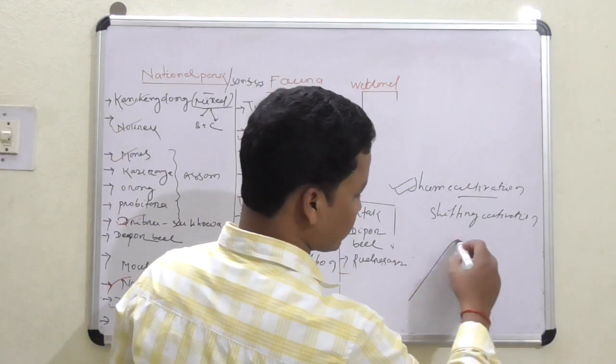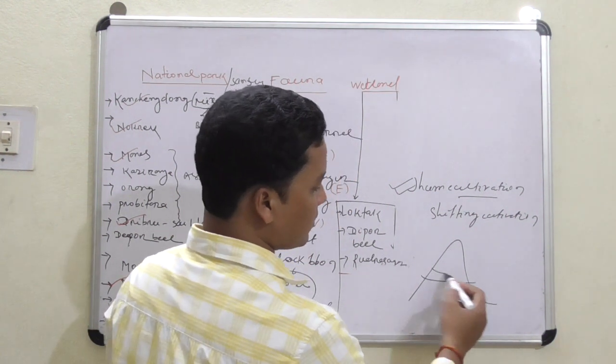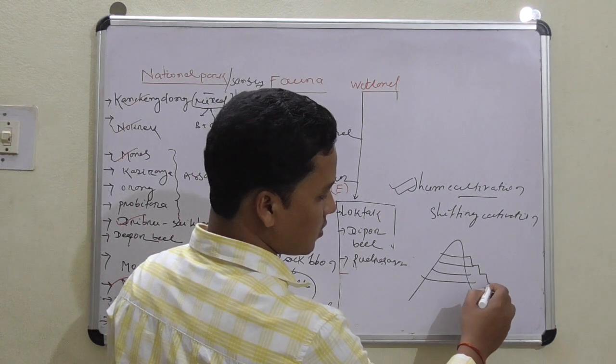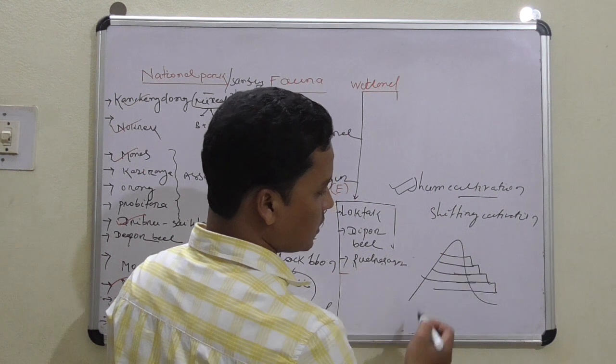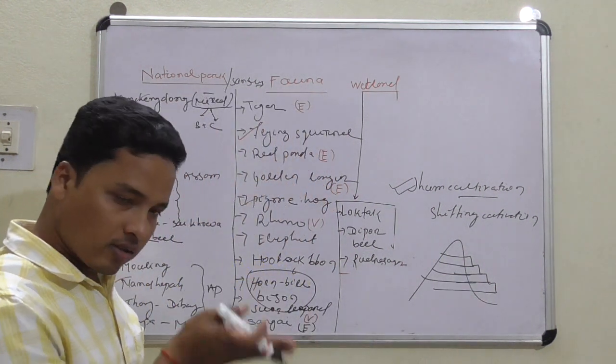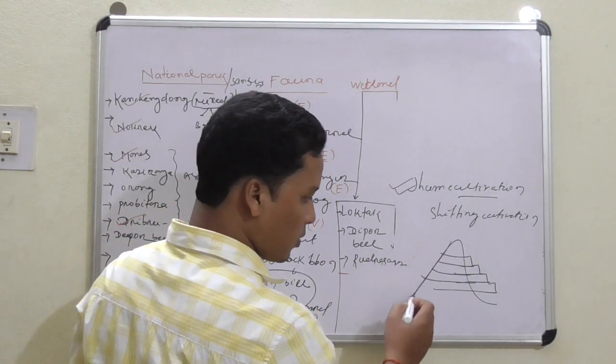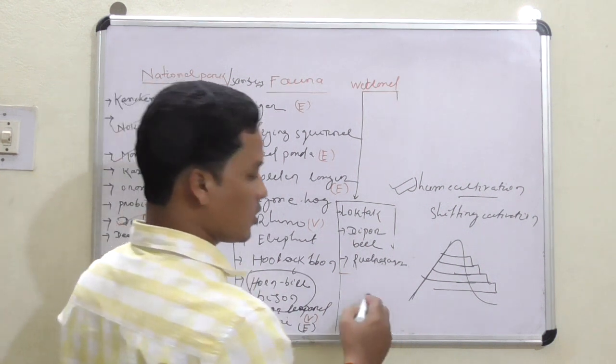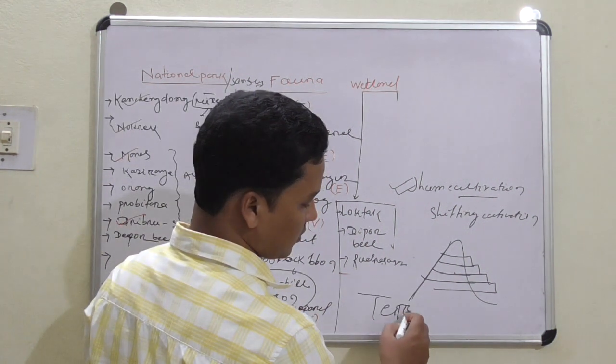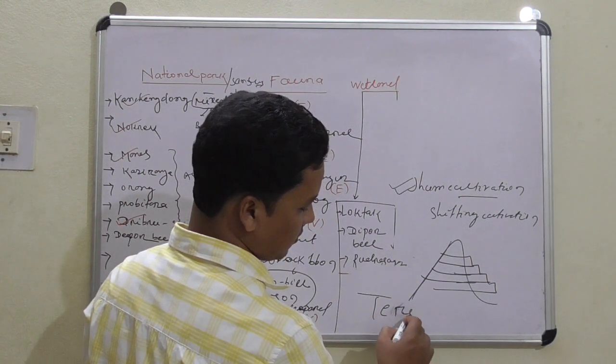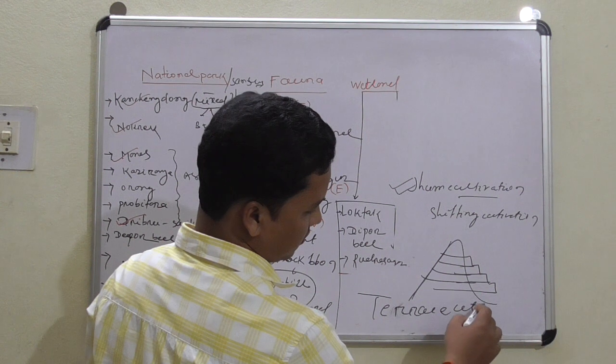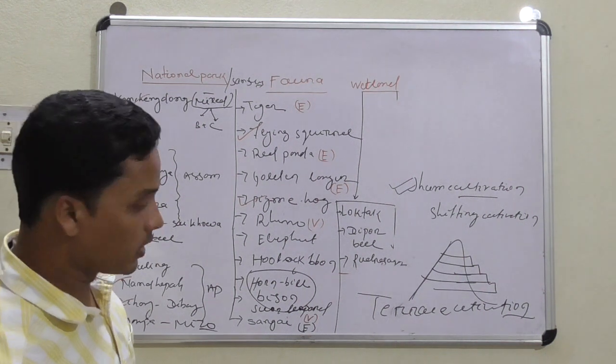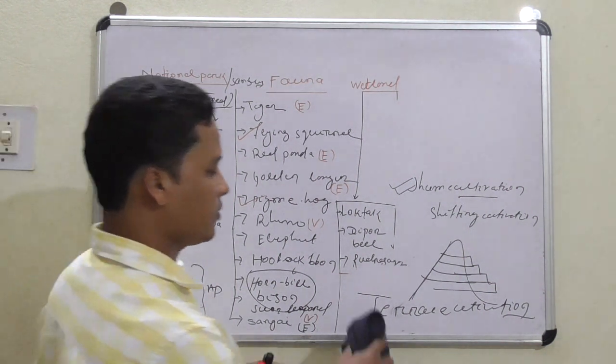Then what is terrace cultivation? Suppose this is the mountain. Terrace cultivation means the slope of the mountain is converted into steps, like this. This is known as terrace cultivation. This is again done in the mountain region.